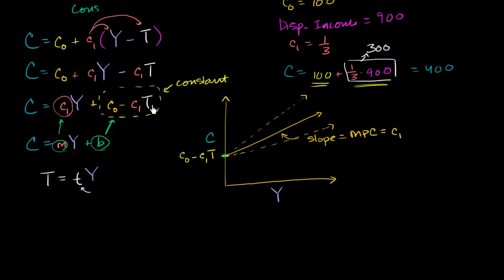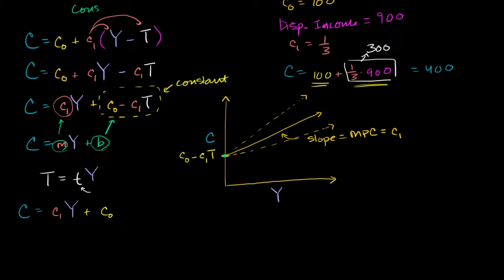If you do it this way and substitute back into the consumption function, you can get an expression for consumption in terms of aggregate income that takes into consideration the idea that taxes are a function of aggregate income. We can rewrite the expression: aggregate consumption equals the marginal propensity to consume times aggregate income, plus autonomous consumption, minus the marginal propensity to consume times lowercase t times y — the tax rate times aggregate income.